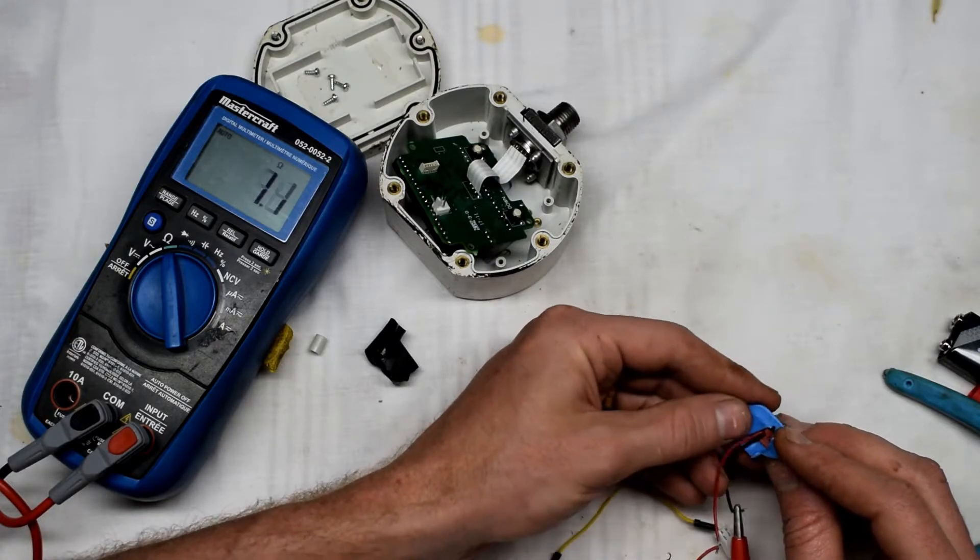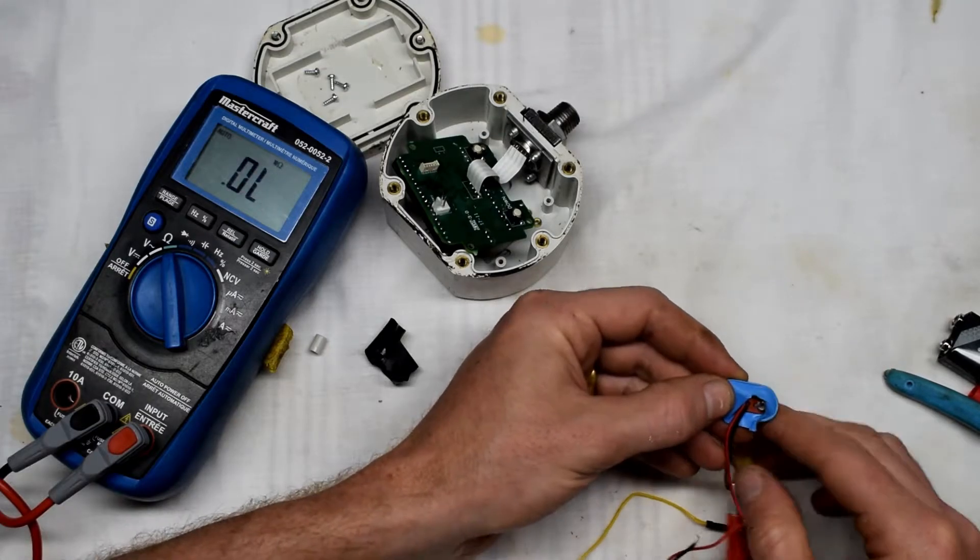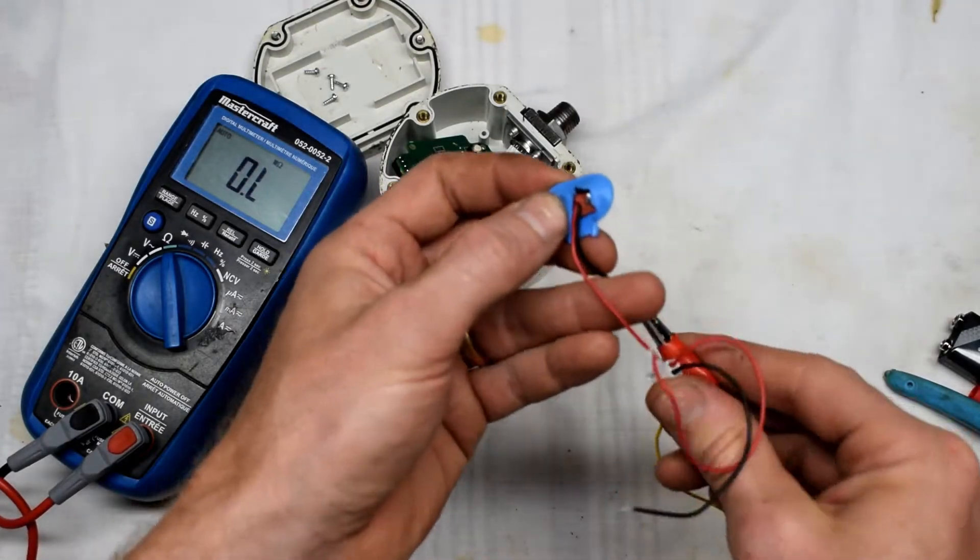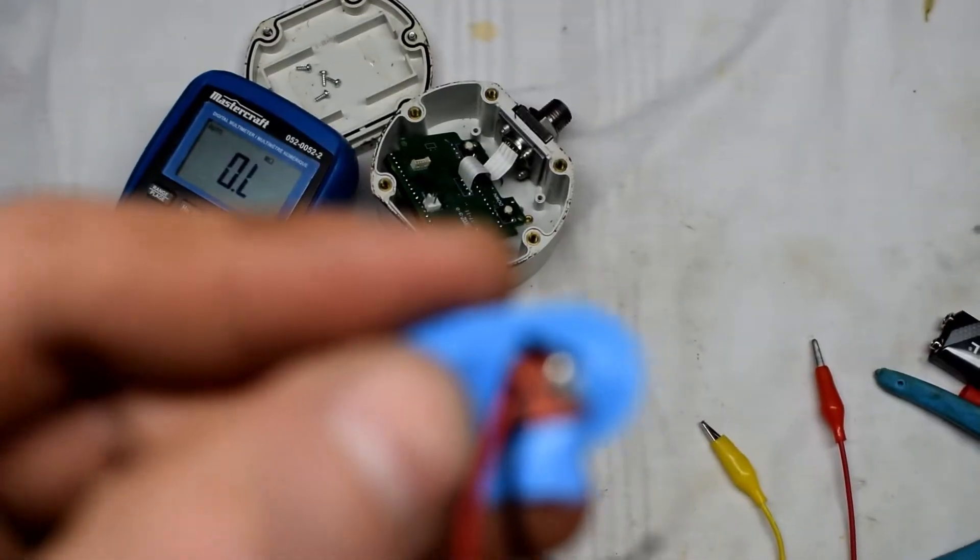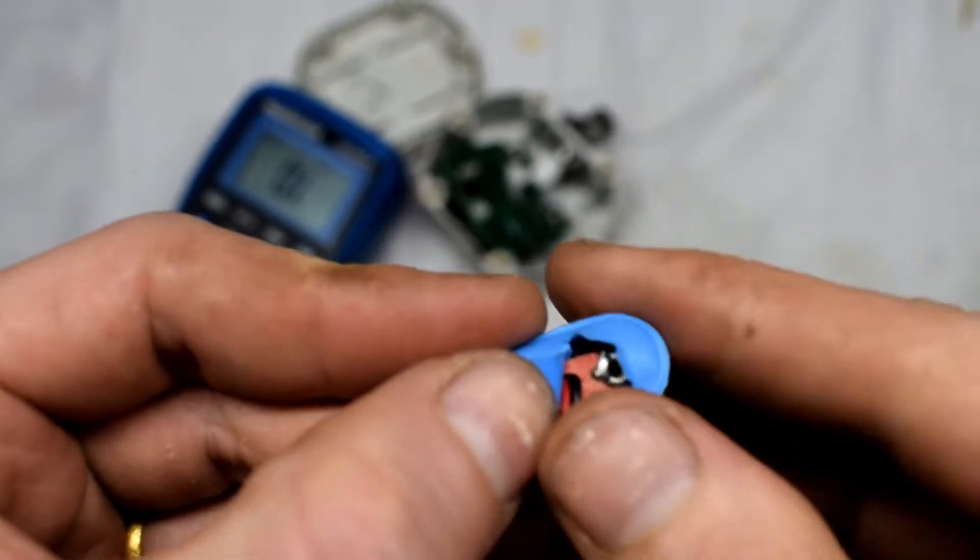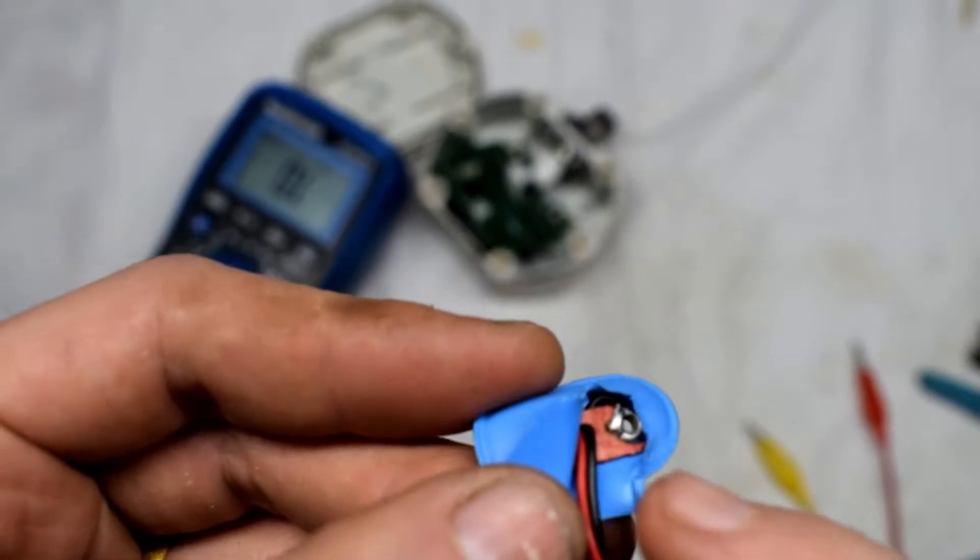Then it goes to 100 ohms. It's not really consistent when I was measuring it, so I know the issue is that connection to the battery. Everything else seems to be fine. It's very interesting that this would happen.